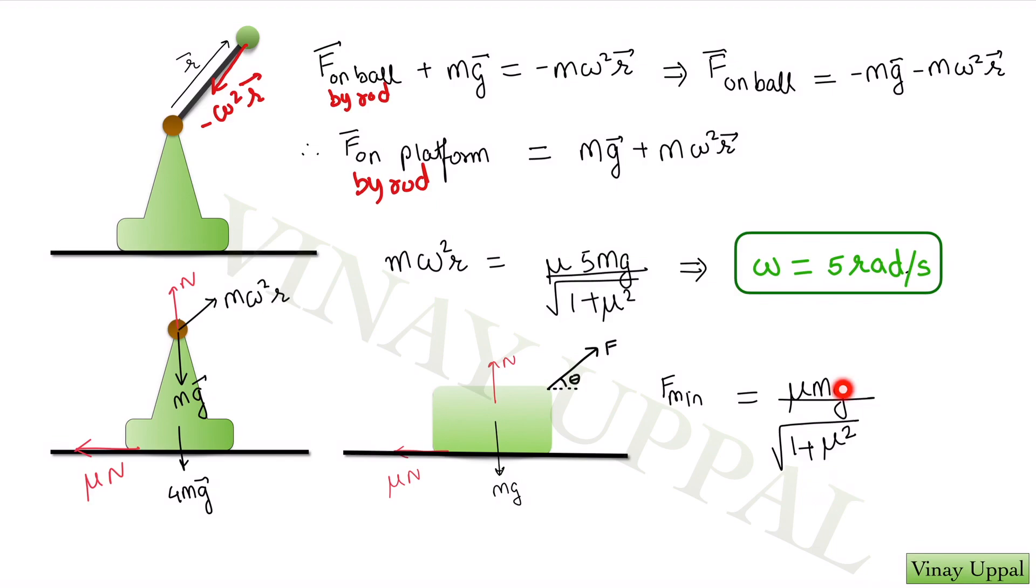So instead of mg, I'll have 5 mg and instead of F minimum which is trying to pull the block, I'll have m omega square r. So my equation will be m omega square r should be equal to mu into 5 mg divided by root of 1 plus mu squared and just substitute the values given in the question and you will get the answer for omega as 5 radian per second.